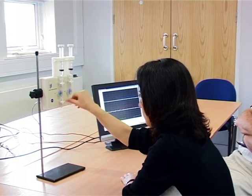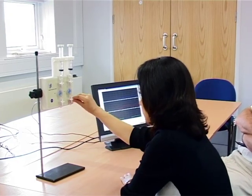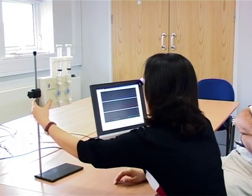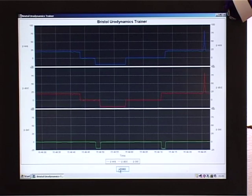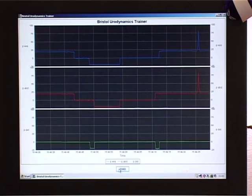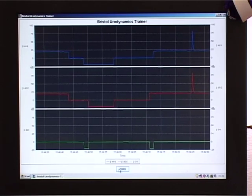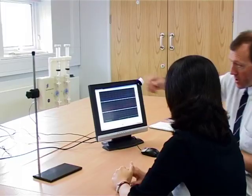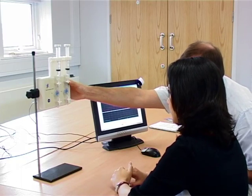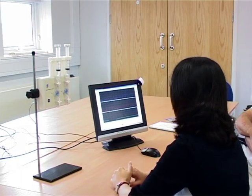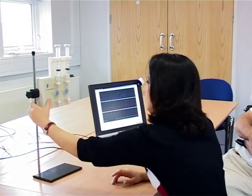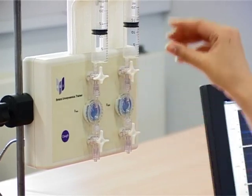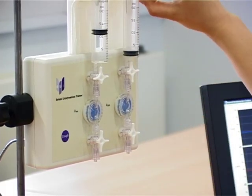The trainer can introduce simulated problems that the trainee has to resolve. In this case, the trainee is setting the system to zero to atmosphere, opening to patient pressure, and checking a cough. The trainer now introduces a simulated air bubble that requires flushing out. The trainee identifies this by doing a cough and then resolving the problem by flushing the air bubble through.